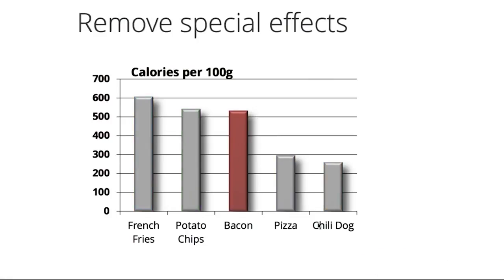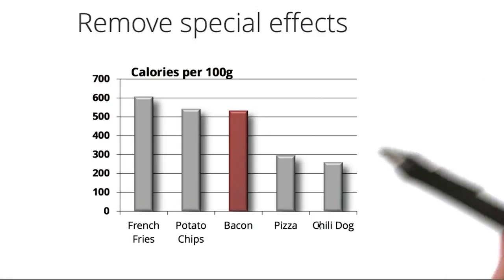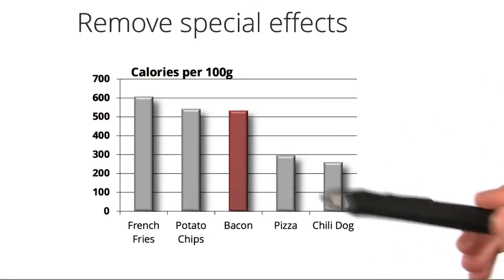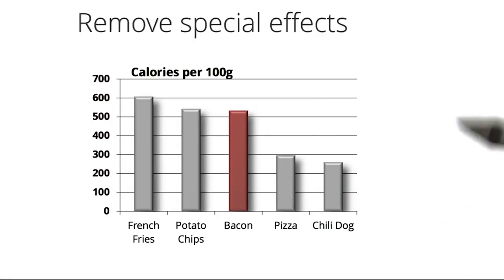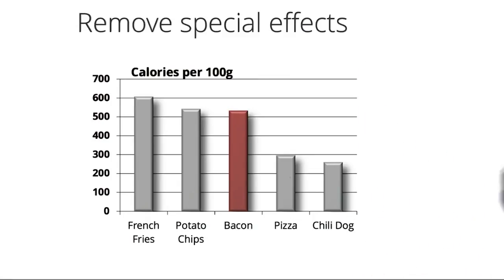Great, we've already improved the data-to-ink ratio quite a bit, but there's more that we can do. Recall that 3D graphs, including gradients and shadowing, can be misleading. So let's flatten out those bars and remove the drop shadows to make it more clear.